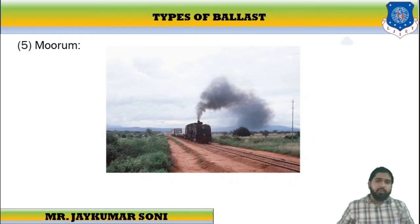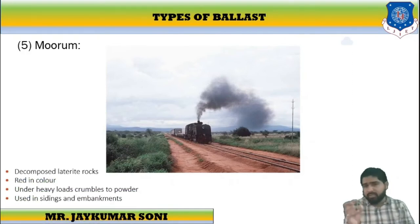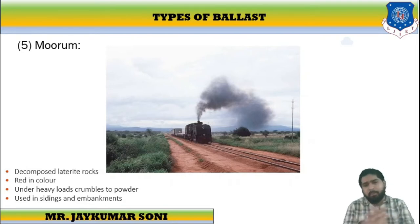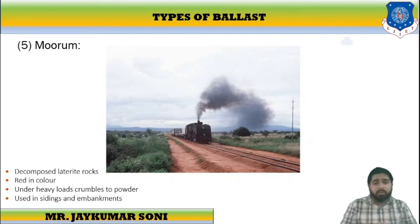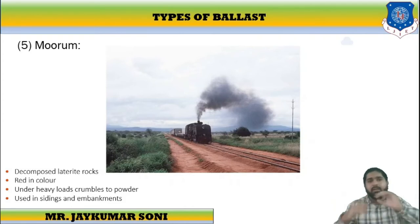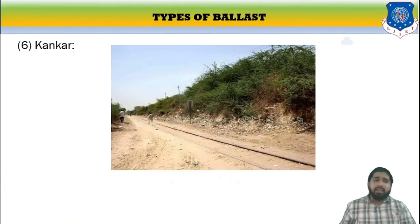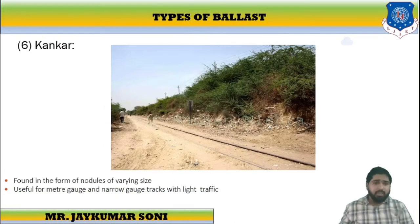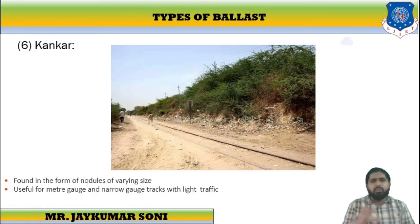Another material is mooram, which you may have observed during road construction at an initial stage. Mooram is decomposed laterite; it is red in color. Under heavy loads it tends to get converted into powder form. It is used in sidings and embankment paths. Another type is concourse ballast, found in the form of modules of varying sizes — small stones or pieces. It is useful for meter gauge and narrow gauge tracks where light traffic is present.